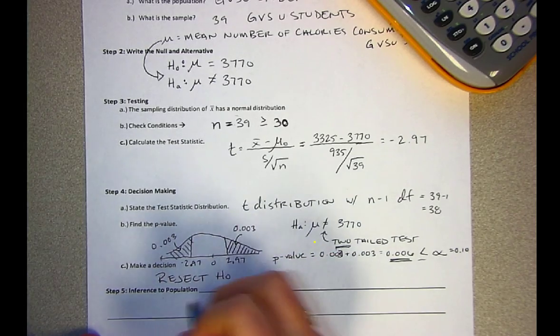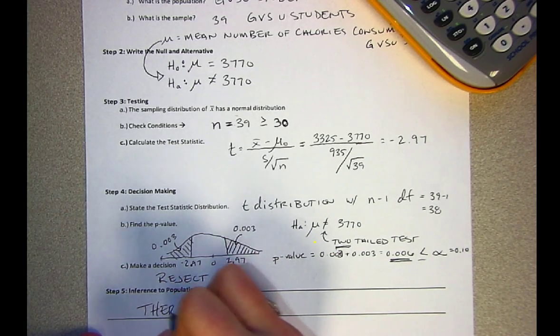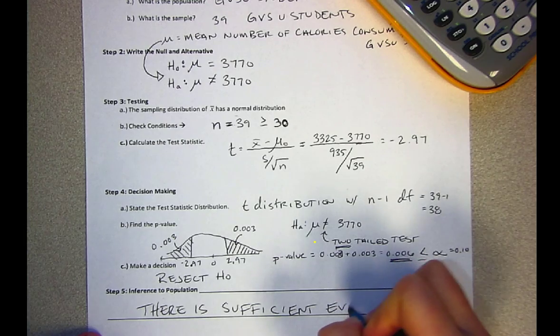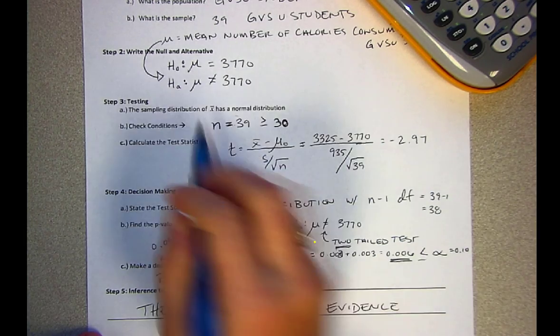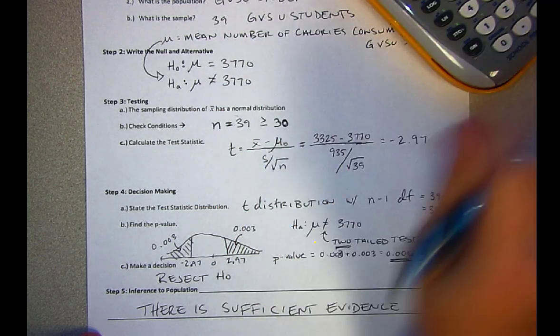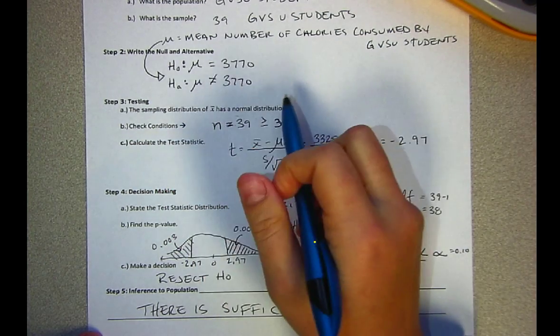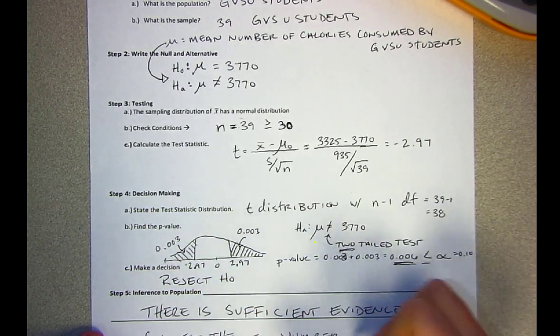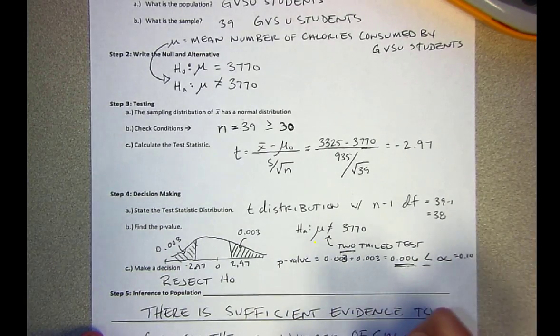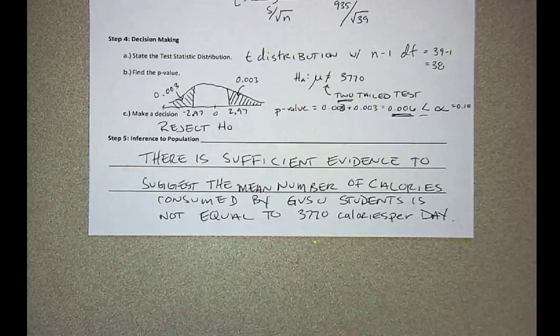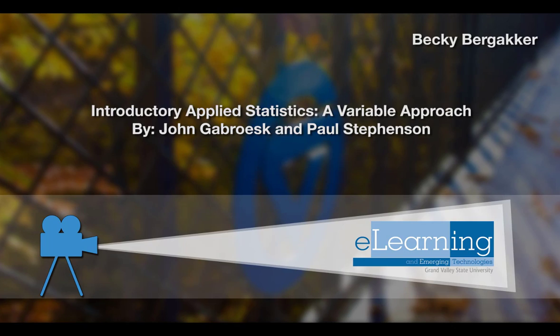Now our conclusion: we'll start with there is sufficient evidence. Because we rejected we start step five with sufficient. The rest of it will just restate our alternative. There's sufficient evidence to suggest mean number of calories consumed by GVSU students is not equal to 3770. So this is a two-tailed test. That's all of the options in terms of a hypothesis test for one population mean. Next we'll look at what can go wrong.